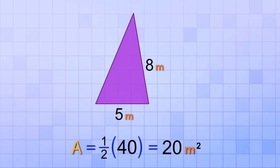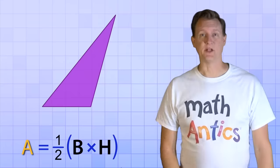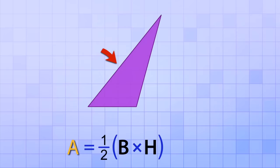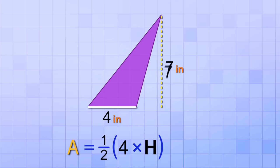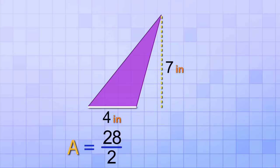Don't forget that the units of measurement for area will always be square units. For our last example, the obtuse triangle has a base of 4 inches and a height of 7 inches. Plugging those into our formula gives us area equals one-half of 4 times 7. 4 times 7 is 28, and one-half of 28 — dividing by 2 — gives us 14. So the area of this obtuse triangle is 14 square inches.